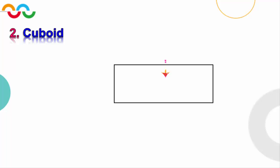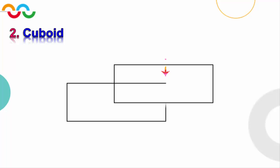Drawing a cuboid is not much different from a cube. First we start by drawing a rectangle like this. Then from the middle of our rectangle we will draw another rectangle which is identical to the first one. Now we connect all two corresponding vertices of the two rectangles together.